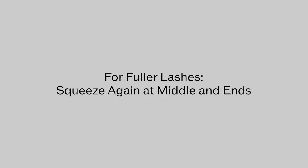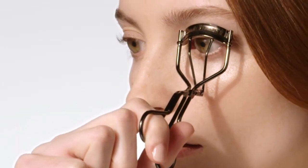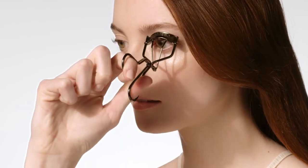For the fullest lashes, move the curler up away from the base and squeeze again in the middle of the lash. Then squeeze one more time close to the tip of the lashes.